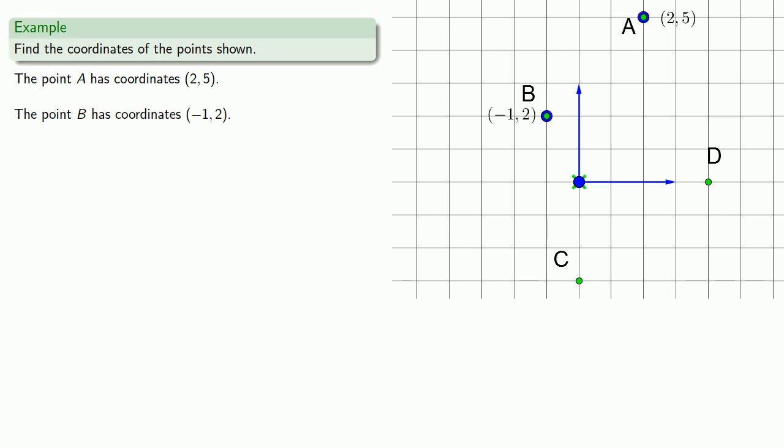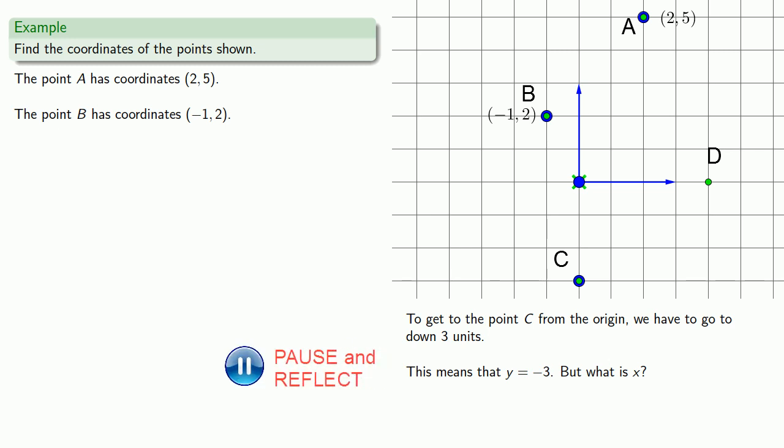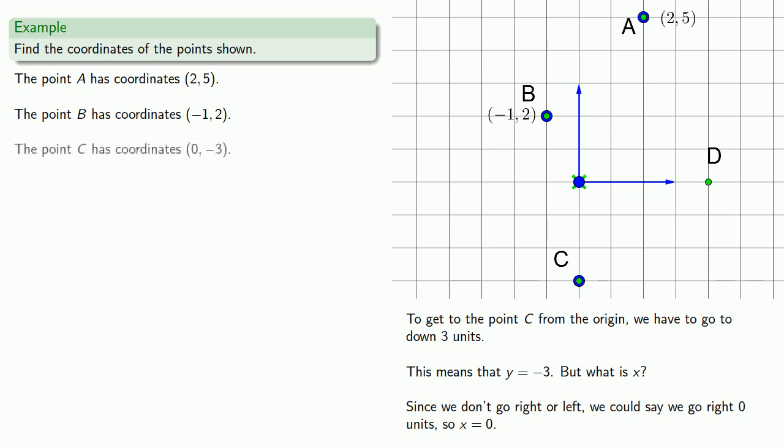To get to the point C from the origin, we have to go down 3 units. This means that y is equal to -3, but what is x? Since we don't go right or left, we could say that we go right 0 units, so x equals 0, and our point will have coordinates (0, -3).